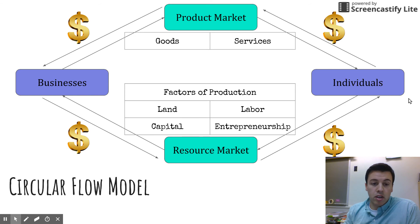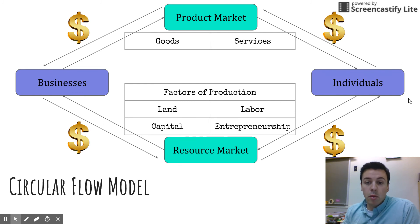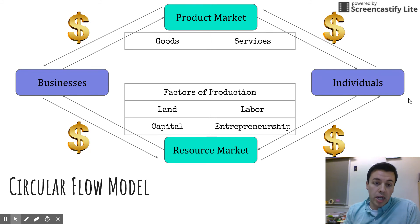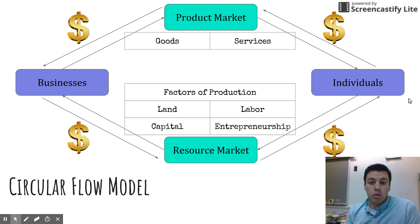For example, let's say the business is Apple — they sell computers, smartphones, and more. You can buy Apple products from their website or from many different retailers. Any place where you can buy an Apple phone or computer is part of the product market — any location or online place where we exchange money for goods and services. Money keeps flowing through the product market back to businesses, back through the resource market, and back to individuals — a never-ending cycle.